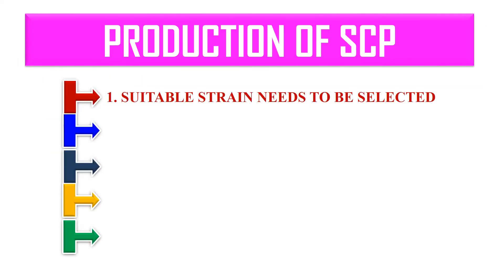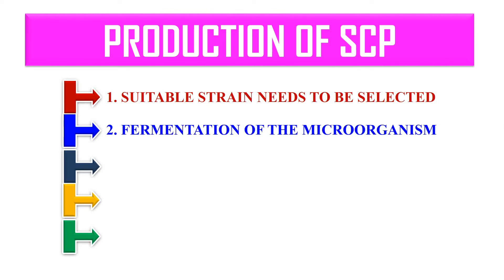Next, what are the different steps for the production of single cell protein? The pure microbial culture needs a good source of nitrogen and sufficient quantities of carbohydrates and other nutrients for growth. The first step is selecting a suitable strain for culture and protein extraction. The second step is fermentation of microorganisms — after selecting the strain, we perform fermentation by providing all conditions for microbial growth.